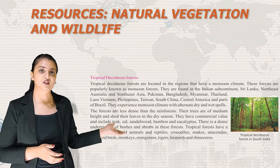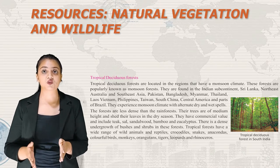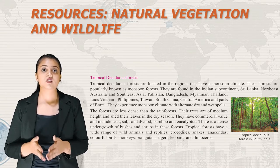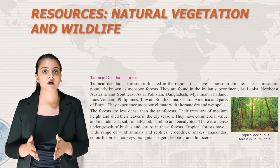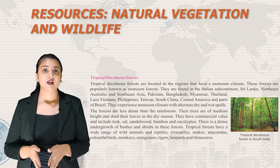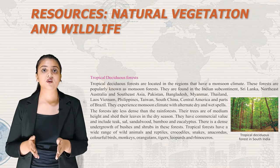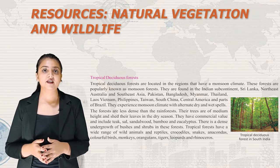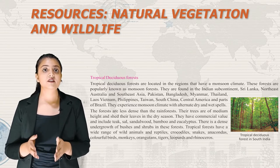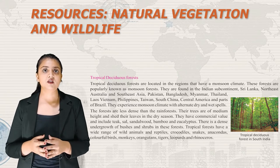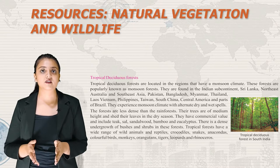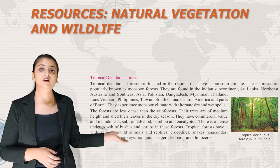Tropical deciduous forests are located in regions with a monsoon climate and are popularly known as monsoon forests. They are found in the Indian subcontinent, Sri Lanka, Northeast Australia, Southeast Asia, Pakistan, Bangladesh, Myanmar, Thailand, Laos, Vietnam, Philippines, Taiwan, South China, Central America and parts of Brazil. The forests are less dense than rainforests, with medium-height trees that shed leaves in the dry season. They have commercial value and include teak, sal, sandalwood, bamboo and eucalyptus. Wildlife includes crocodiles, snakes, anacondas, colorful birds, monkeys, orangutans, tigers, leopards and rhinoceros.